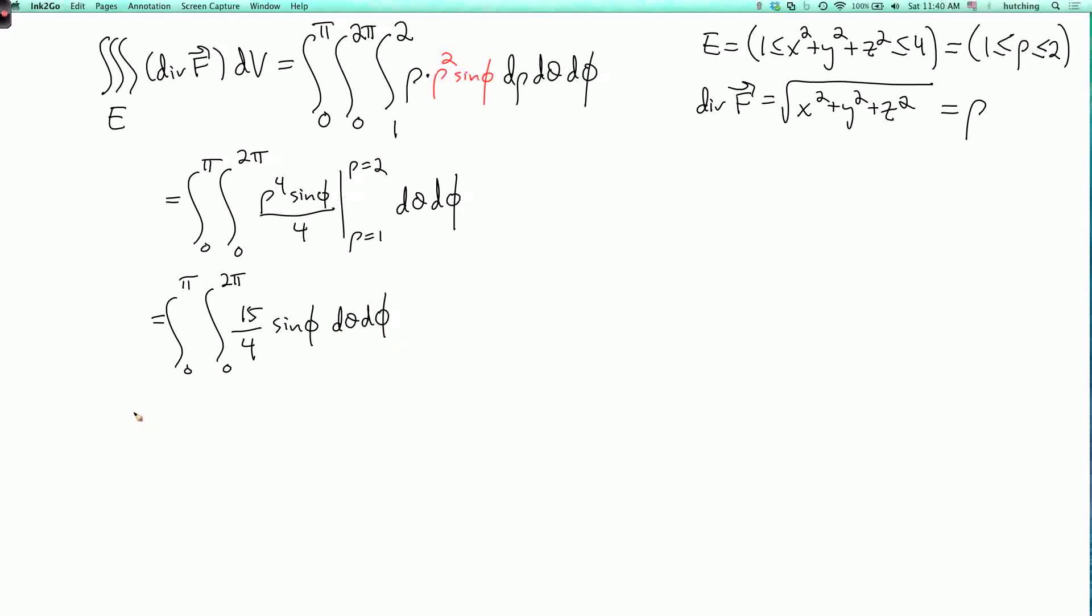And when I integrate over theta, I just multiply by 2 pi. So this is 15 pi over 2, sine phi, d phi. And if you've been doing calculus for this whole course, then you probably know immediately that the integral sine phi from 0 to pi is 2. So this is equal to 15 pi.